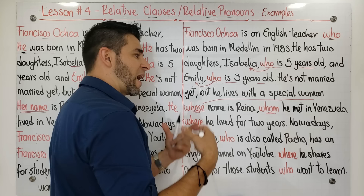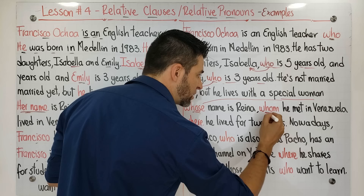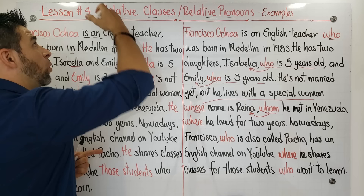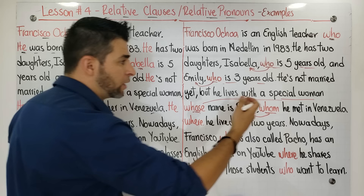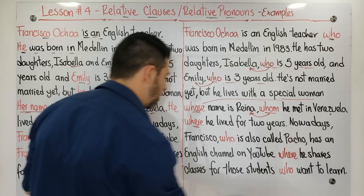'Whom he met in Venezuela.' What does 'whom' mean? It means 'a quien' or 'a quienes.' This 'whom' is talking about Reina — that's why we're forming a related clause; they all have something connecting them. So: 'whose name is Reina, whom he met in Venezuela...'